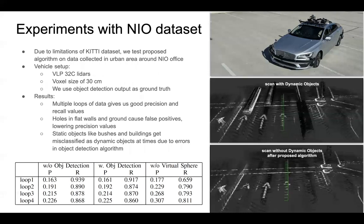To evaluate our algorithm performance, tests and real-world experiments were performed on the NEO dataset and the KITTI dataset. Our approach relies on building occupancy maps, and it is hard to estimate the time-invariant occupancy state of an environment with a single set of scans, as scans may contain moving objects. Therefore, we need multiple sets of scans from the same area to identify temporarily static objects. Since KITTI only has a few loops of driving through the same parts of the map mostly for loop closure, we built our own dataset in an urban area around the NEO office, using a voxel size of 30 centimeters. Results from multiple loops gave good recall values, while false positives caused by holes in flat walls and ground, as well as object detection misclassifications, reduced precision scores.